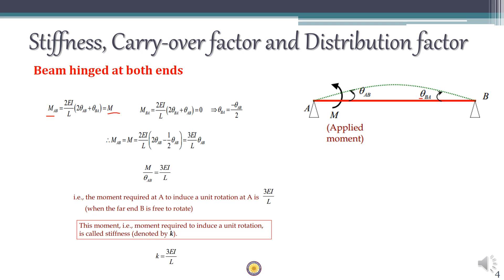Going back to the slope deflection equation for M_AB and substituting the values, it is noted that when the moment is applied at A there is no moment applied at B, so M_BA equals zero. From the slope deflection equation we get the relationship: theta_BA equals minus theta_AB divided by 2.